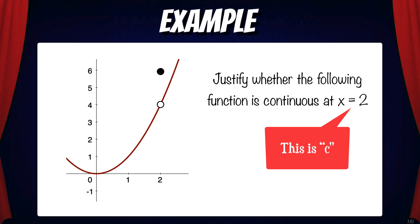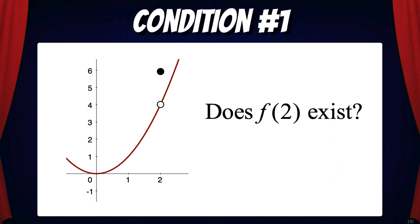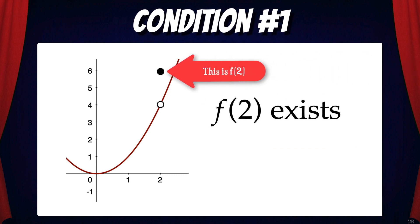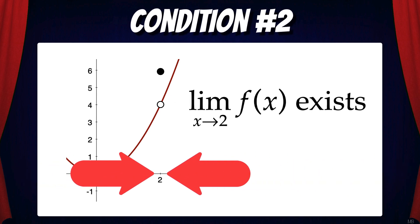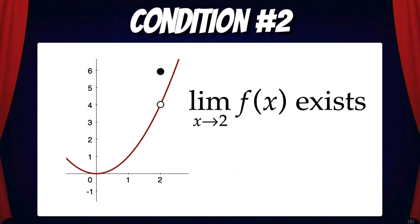Let's check condition 1: does f(2) exist? Yes it does — it's this little black dot floating up here. As x goes to 2, our function looks like it's approaching a height of 4, so the limit exists.